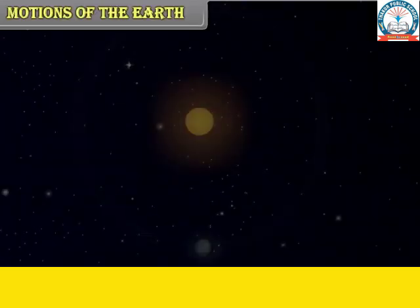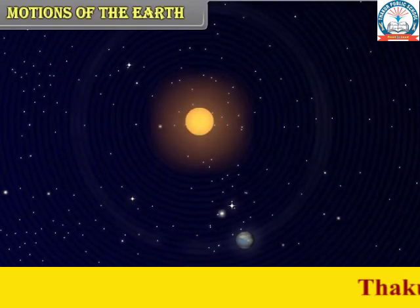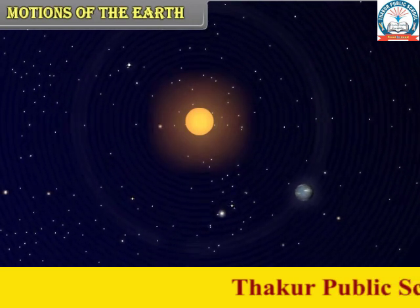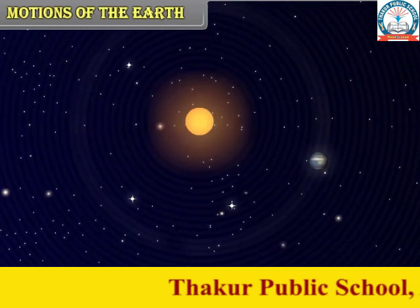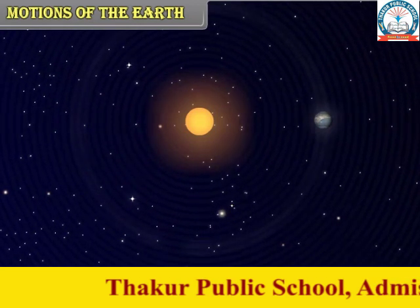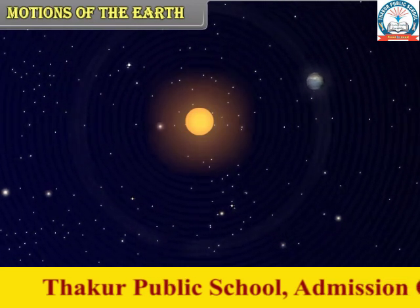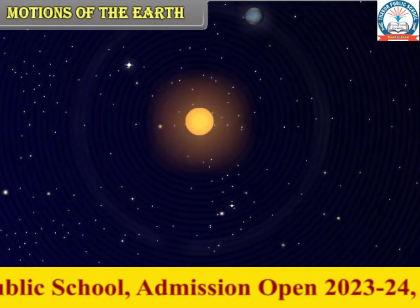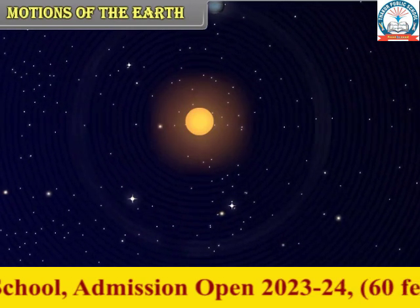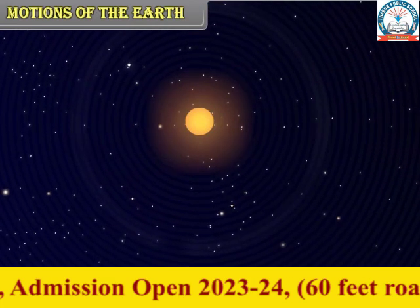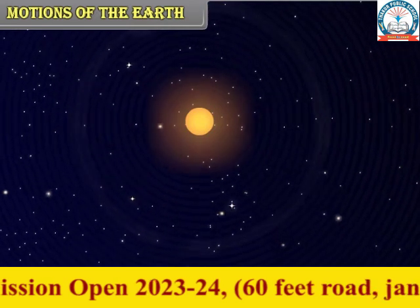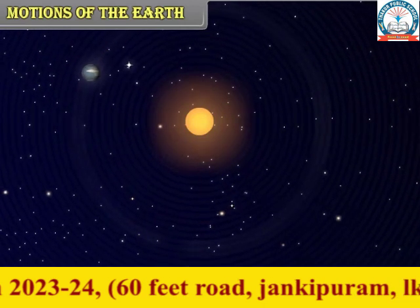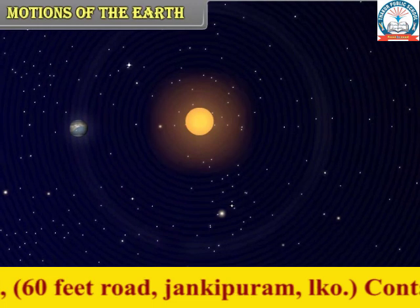Motions of the Earth. It seems as if the sun rises in the morning from the eastern horizon, goes overhead, and then in the evening sets in the western horizon. In fact, this is not so. It is not the sun but the earth that moves. The sun is in the center and the earth goes around the sun. The earth has two important movements.